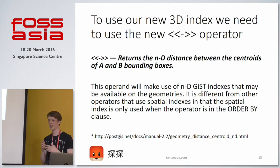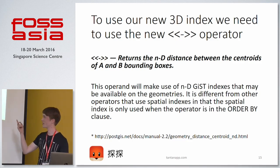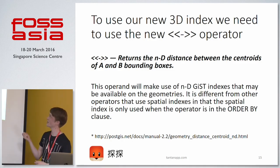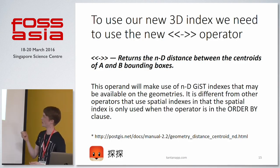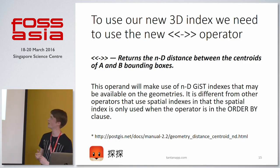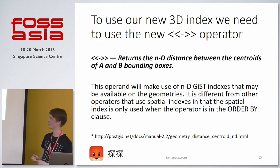To use the 3D or 4D query we have to use this new operator I showed earlier. The documentation says this operator returns the N-dimensional distance between the centroids of the bounding boxes of A and B. For our case this is also no problem because we have point locations for our users, and the bounding box of a point location is also a point.